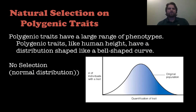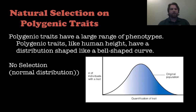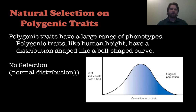Now we're going to look at natural selection in polygenic traits. Anything polygenic is controlled by multiple genes — for example, human height. When looking at natural selection with polygenic traits, there are a few different types of curves. A normal polygenic trait with no natural selection shows a normal distribution, or bell curve. This is what you see when there is no selective pressure whatsoever.